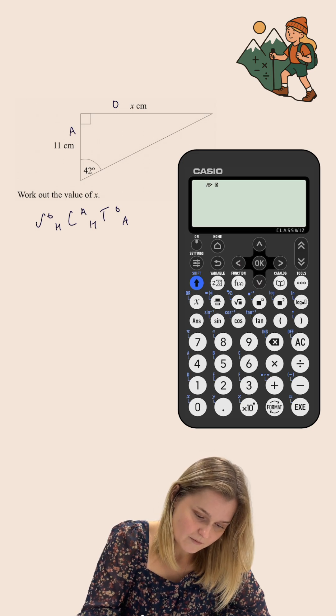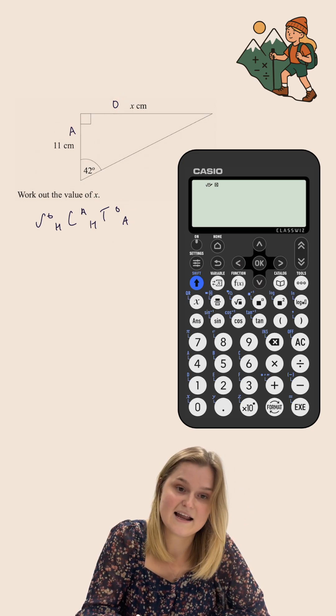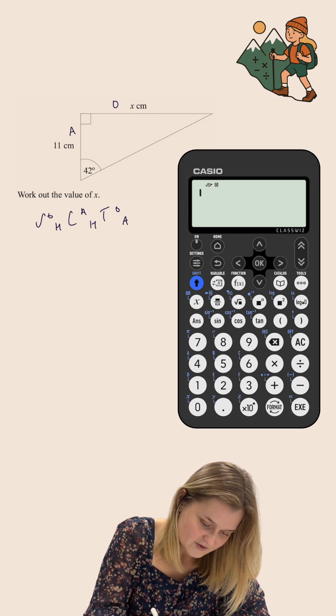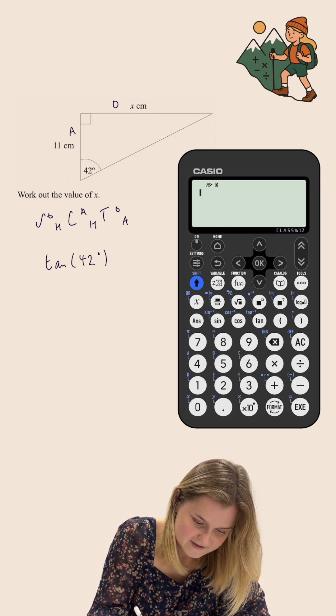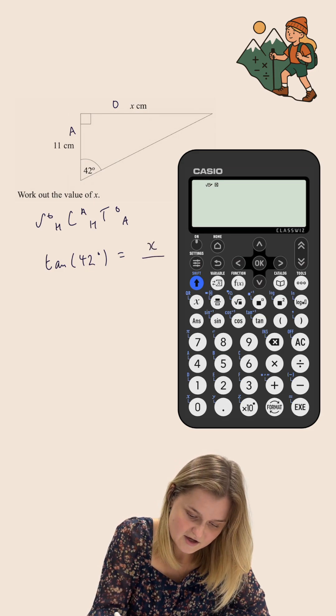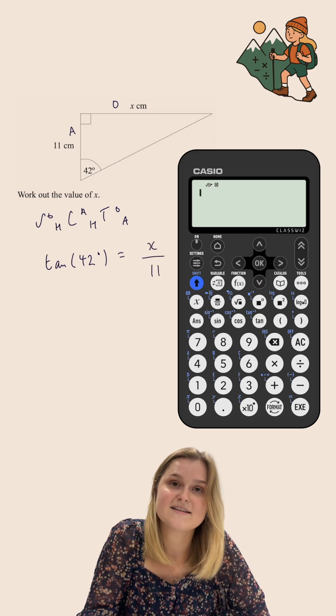Now because I've got my opposite and my adjacent, I'm going to use the tan part of SOHCAHTOA. So tan of my angle, which is 42 degrees, is equal to the opposite, which is x, over the adjacent, which is 11.